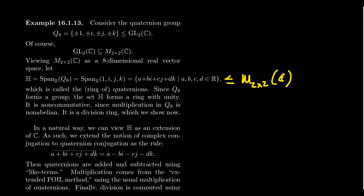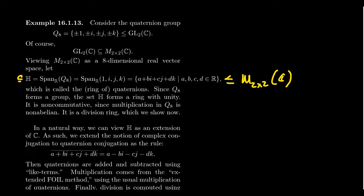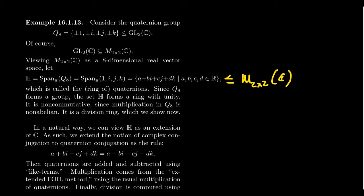The multiplication is non-commutative — while M₂×₂(ℂ) is non-commutative, a subset could potentially be commutative. However, H contains the quaternion group as a multiplicatively closed subset, and that subset is non-commutative — it's a non-Abelian group. So this subring is non-commutative, giving us a non-commutative ring with unity. I claim it is, in fact, also a division ring, which we'll discuss by showing how to compute the inverse of an element.